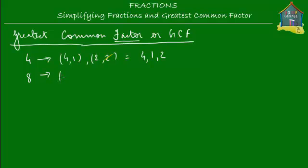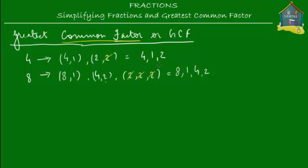Now let's find out the factors of 8. The factors of 8 are: 8 and 1, because 8 times 1 gives you 8; then 4 and 2, because 4 times 2 gives you 8; and also 2, because 2 times 2 times 2 gives you 8. So the factors of 8 are 8, 1, 4, and 2. Now let's find the common factors of 4 and 8. The common factors are 4 — present in both — and 1, and also 2. So the common factors of 4 and 8 are 4, 1, and 2.